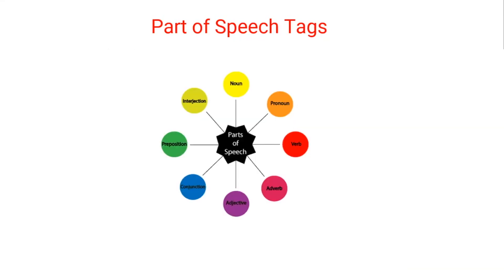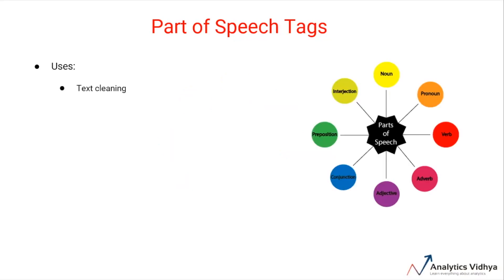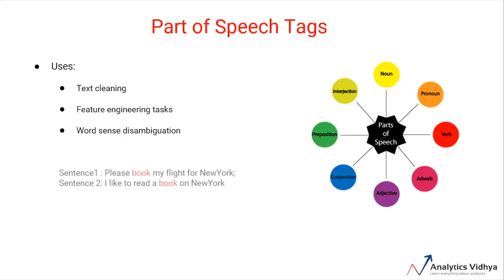Part of speech tags have a large number of applications and they are used in a variety of tasks such as text cleaning, feature engineering tasks, and word sense disambiguation. For example, consider the sentence: 'Please book my flight for New York,' and consider the alternate sentence: 'I like to read a book on New York.' In both sentences, the keyword book is used, but in sentence one it is used as a verb while in sentence two it is used as a noun.